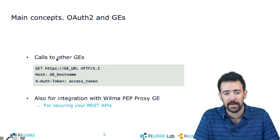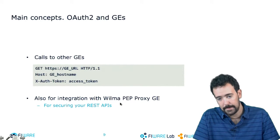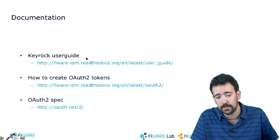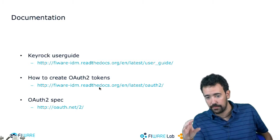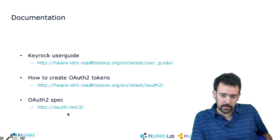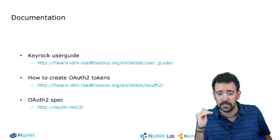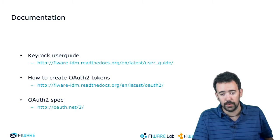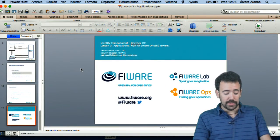In summary, in order to send calls to other Generic Enablers you have to include this token in the header. I provide the link to the user guide, the OAuth2 document describing the four mechanisms, and the specification of the OAuth2 protocol. In the main page of the FIWARE courses under the security chapter you will also find the PEP proxy course to understand how it works.